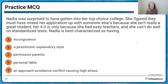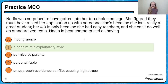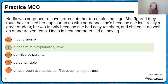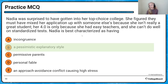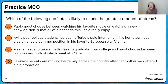Practice: Nadia is explaining her acceptance to her top-choice college very pessimistically. She says the only reason she got in was not because she's a good student — she got a 4.0 because she has easy teachers, and she doesn't do well on standardized tests. She has a pessimistic explanatory style and is likely to experience a lot of stress in life.